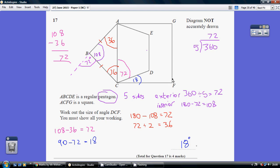Now ACF is a corner of a square. So together that is 90. So if that is 72, this must be 18.